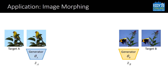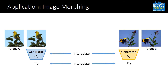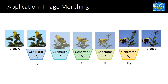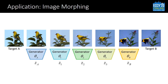For image morphing, we have two target images which would produce two different generators and latent vectors after reconstruction. Therefore, we interpolate between both the generators and the latent vectors, resulting in a series of generators and latent vectors. These generators and latent vectors would produce interpolated images. Here the bird is shifting in a natural way, as if it starts to fly from the tree branch.